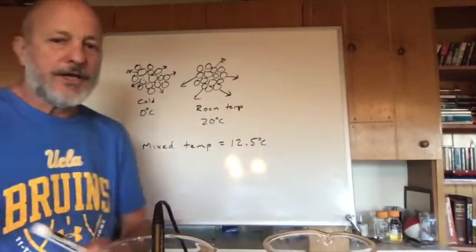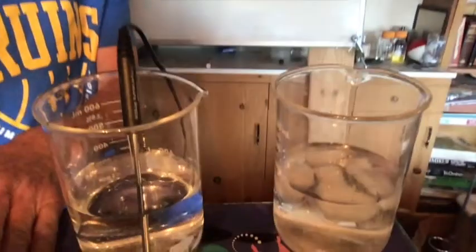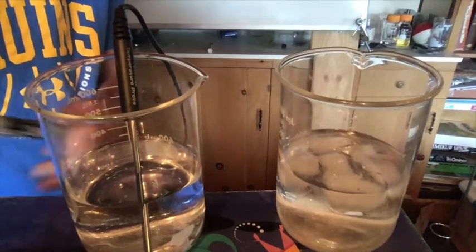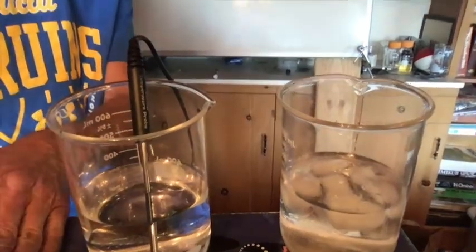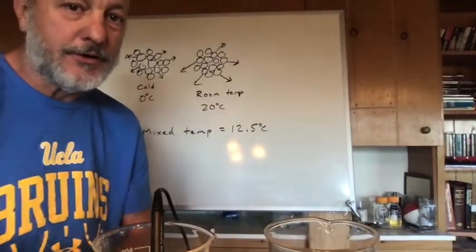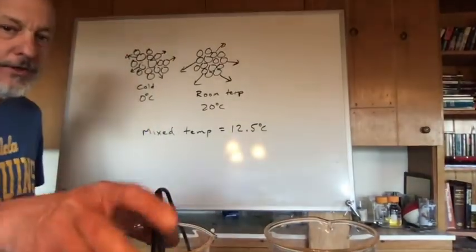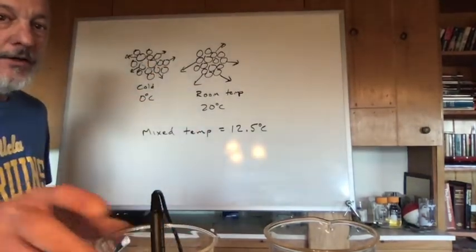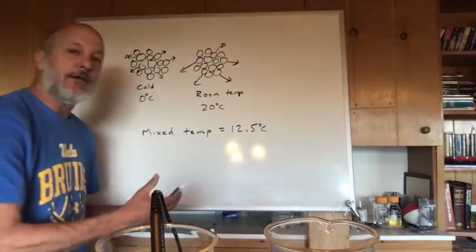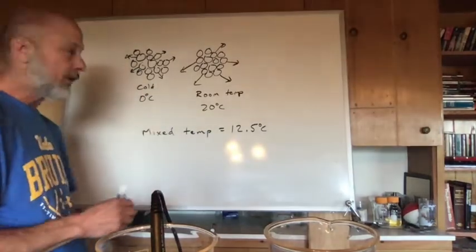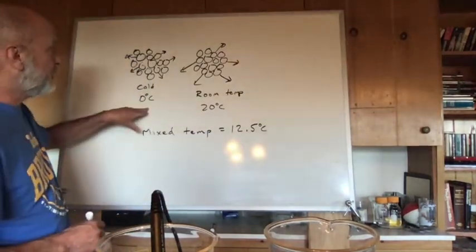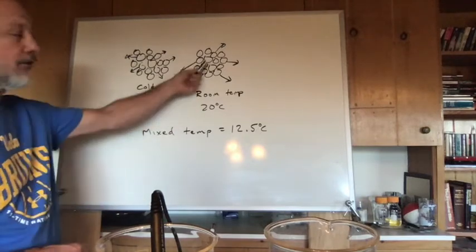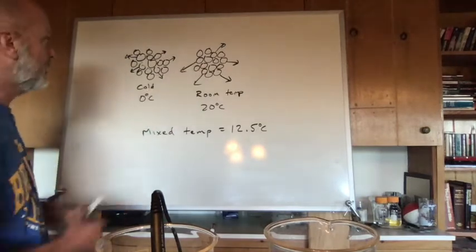Let's look at what's happening in our beakers. The ice in one is melting a little bit, and the other is starting to equalize in temperature. For the beaker with just cold water — no ice — I put cold water at the same temperature as the ice. The ice was zero degrees and the cold water was zero degrees C. I'm showing the room temperature water at 20 degrees C with longer arrows to indicate faster-moving molecules.